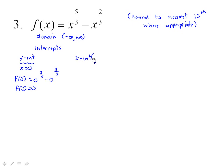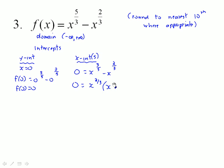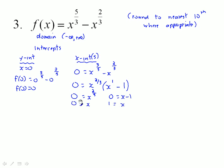For the x-intercepts, we set 0 = x^(5/3) - x^(2/3). The best way to solve this is to factor out the greatest common factor of those two terms, which is x^(2/3). Dividing and subtracting exponents leaves x^(3/3) = x, and x^(2/3) divided by x^(2/3) equals 1. Setting each factor to zero: x^(2/3) = 0 gives x = 0, and x - 1 = 0 gives x = 1. So those are our two x-intercepts.